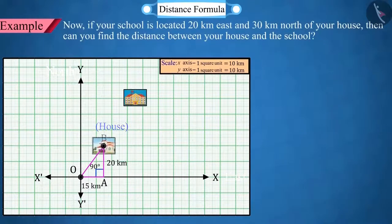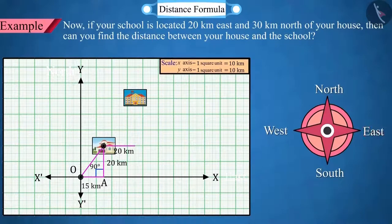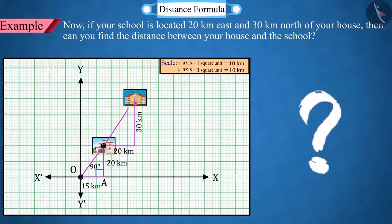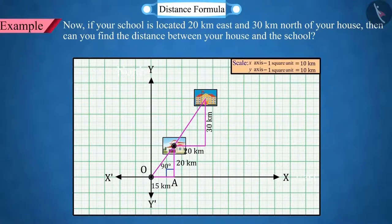Now if your school is located 20 kilometers east and 30 kilometers north of the house, then can you find the distance between the house and the school? Let's solve this together.